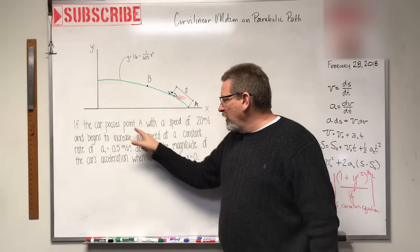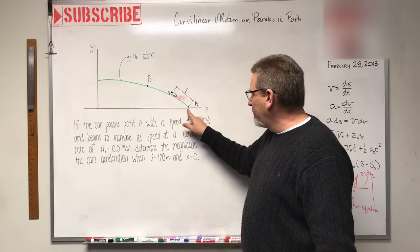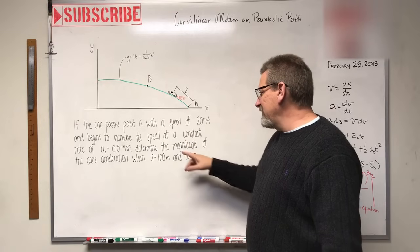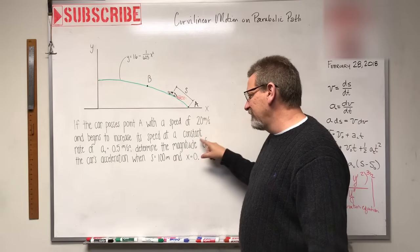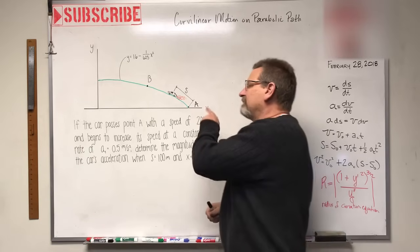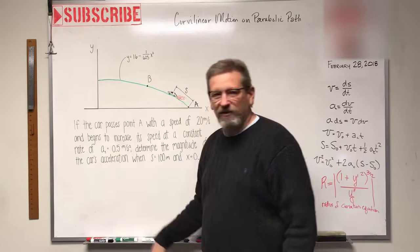So if the car passes point A with a speed of 20 meters per second and it's going up this hill, and begins to increase its speed at a constant rate of 0.5 meters per second squared. Now that's good - it says constant acceleration.